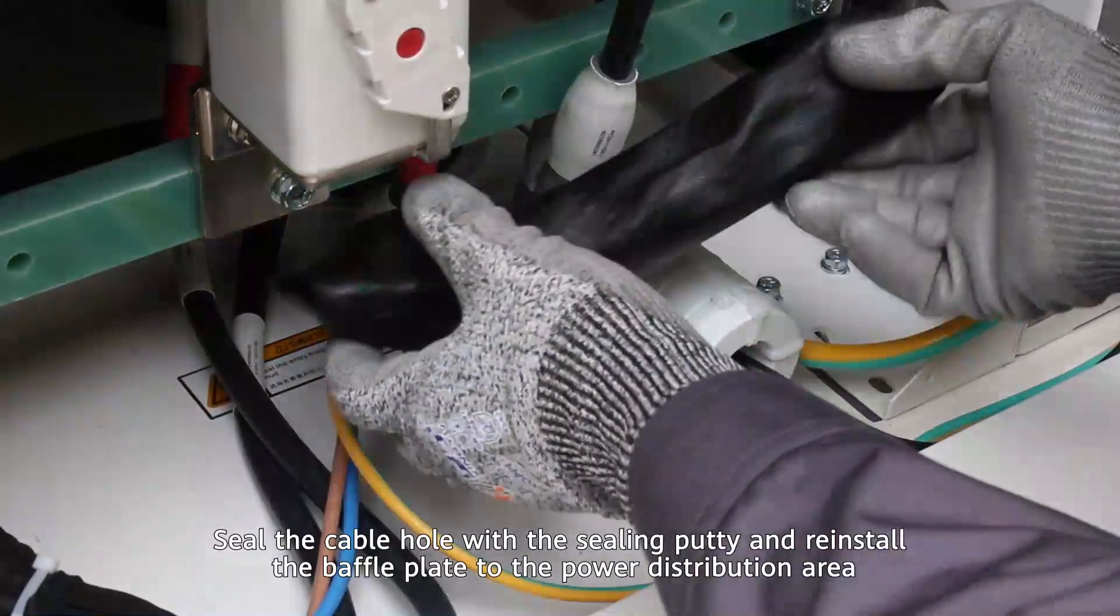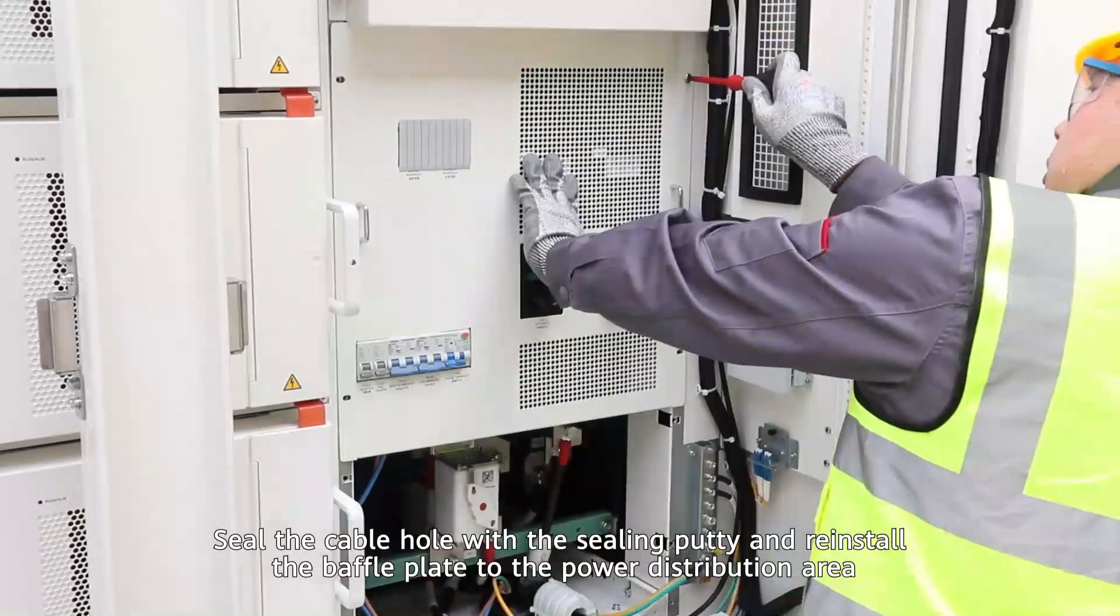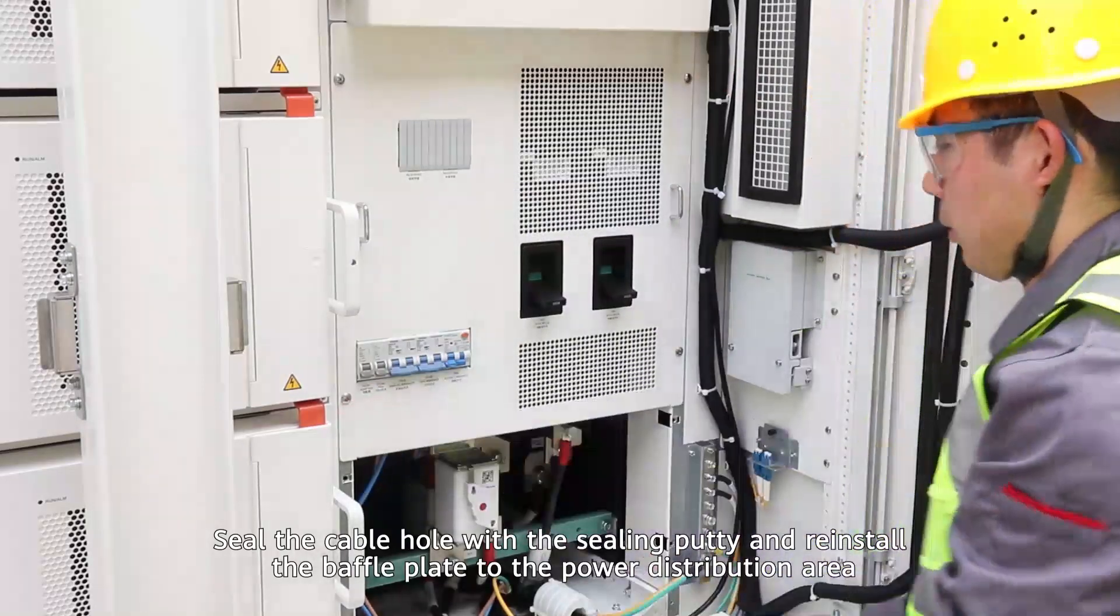Seal the cable hole with the sealing putty and reinstall the baffle plate to the power distribution area.